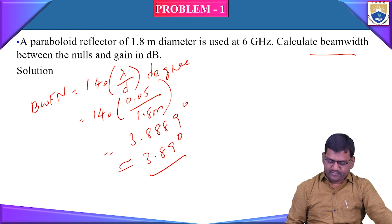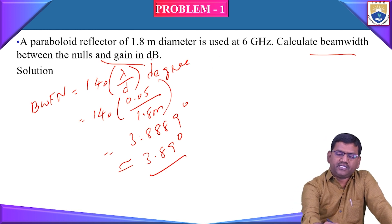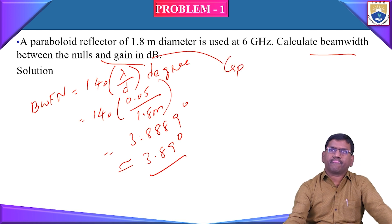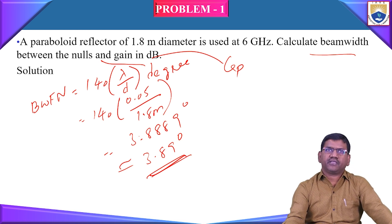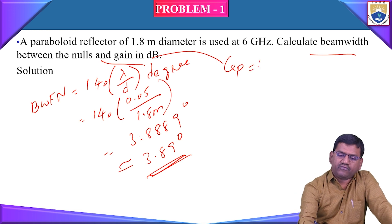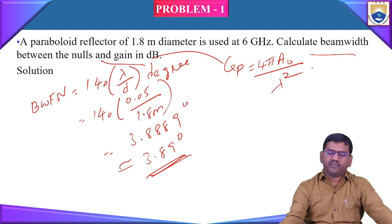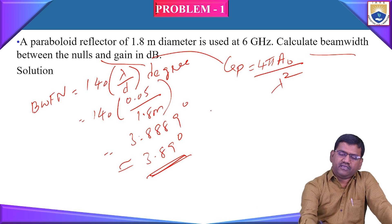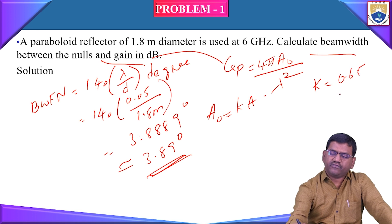We are also going to calculate the gain in dB. The power gain of the paraboloid is represented by the symbol Gp. BWFN is 3.89 degrees. The power gain is given by Gp = 4πA₀/λ², where A₀ = k·A. The value of k is taken as 0.65 for a dipole antenna used as the primary source.